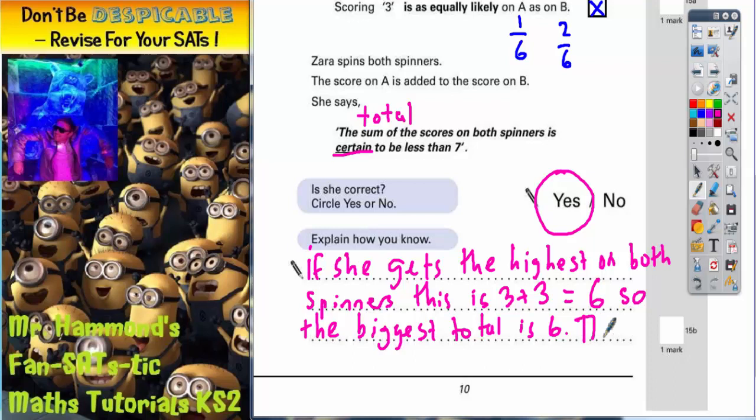This means she is certain to get less than seven. And that's all you need to write to explain it.